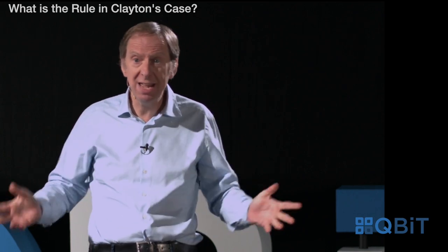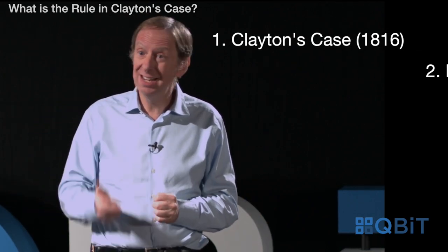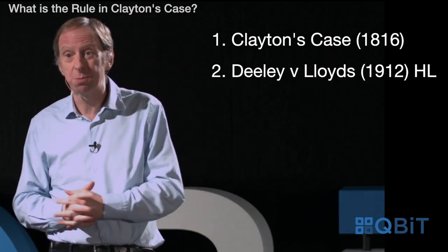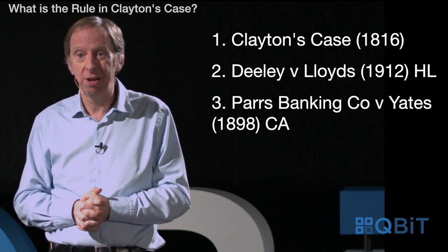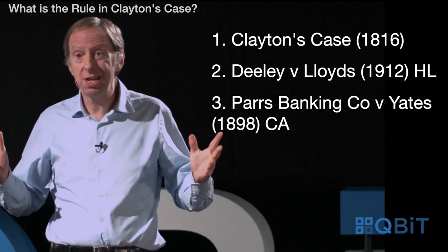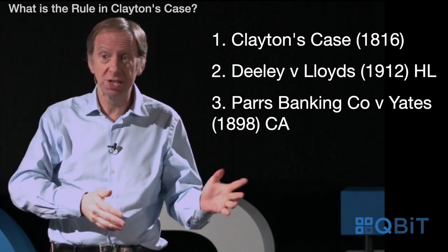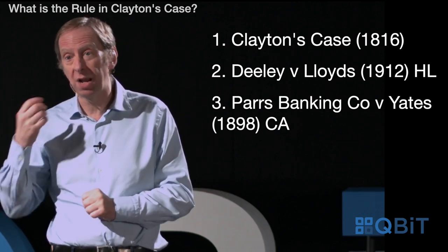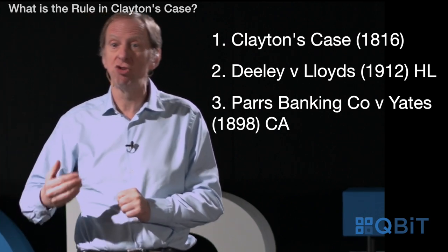So it's really easy. There are only three cases you need to know: Clayton's case, Dealey and Lloyds, and if you want to be a real expert, Parr's Banking Company. Clayton's case — the rule is first in, first out — and in a running account, find the closing balance and track back the last entries that make up that balance. Thank you for watching.